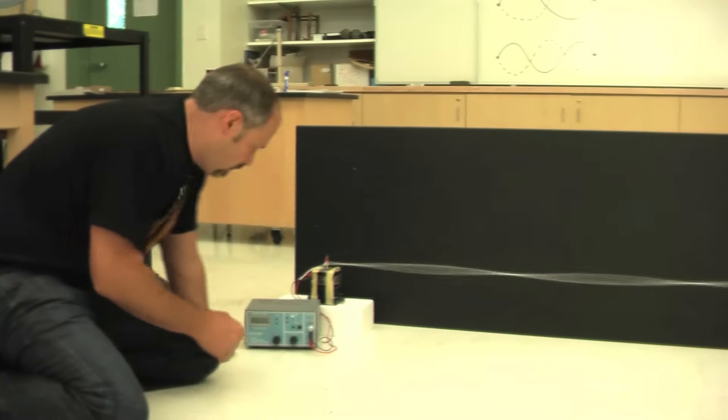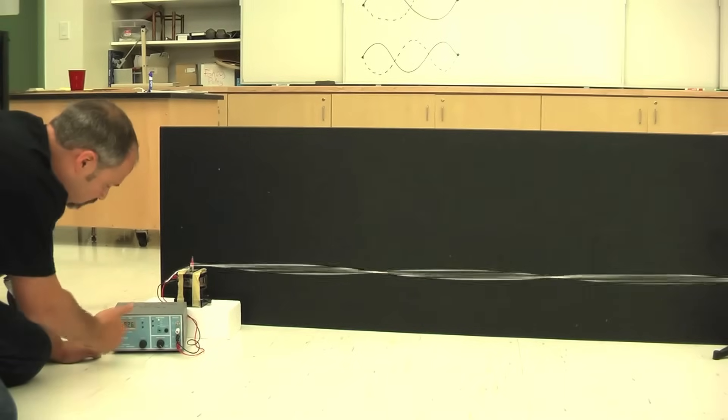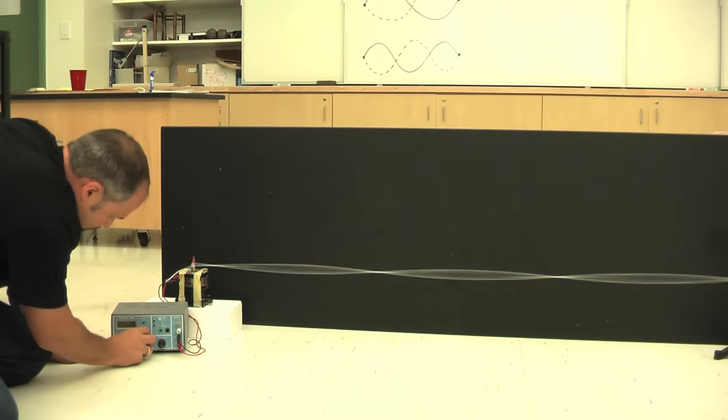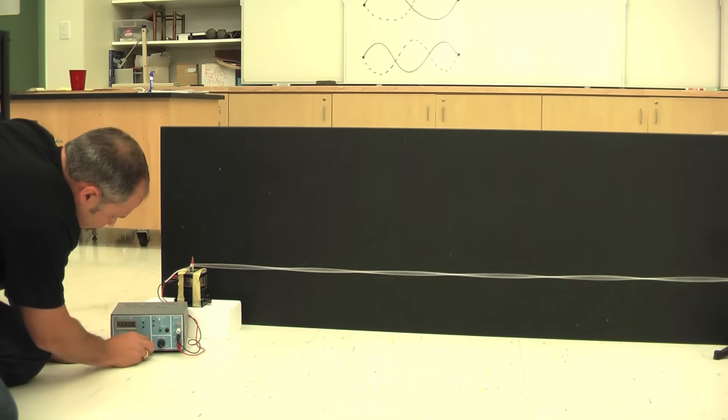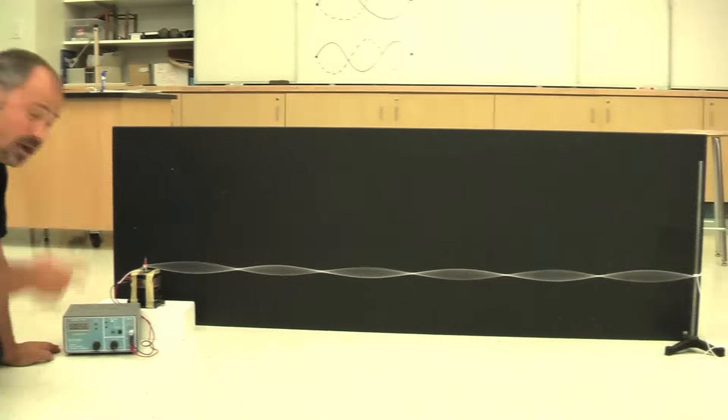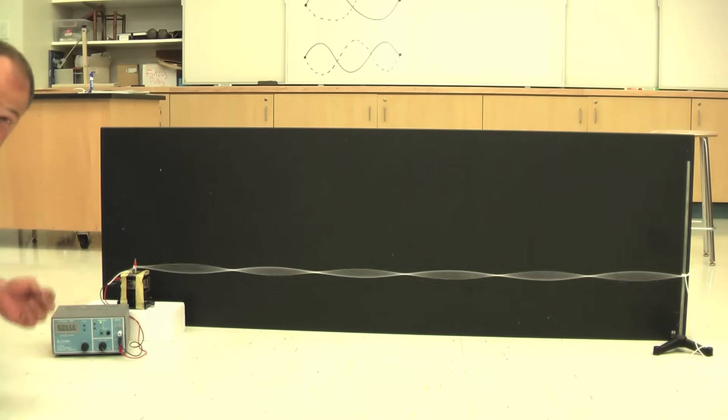Third harmonic, one and a half wavelengths. Let's go to the sixth harmonic. The sixth harmonic will just be double this frequency. So we go up to 50. And there we go. That's the sixth harmonic. Beautiful. And it's six times the fundamental frequency, which we measured in the beginning, to be 8.5 hertz.